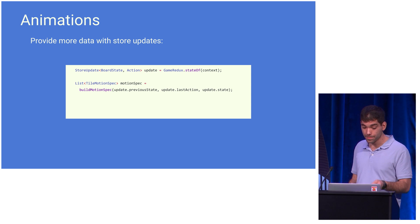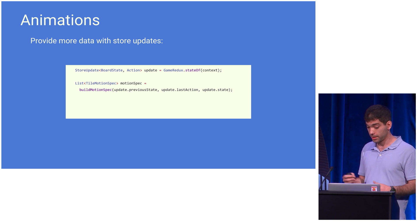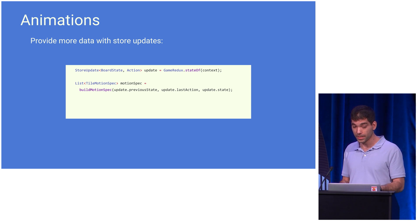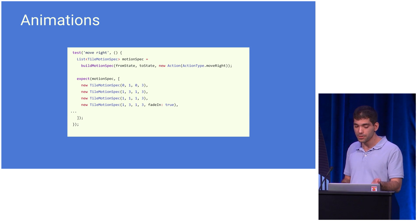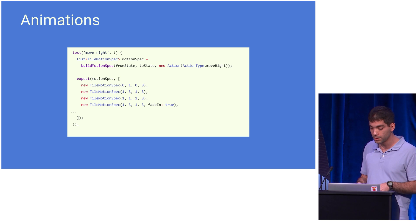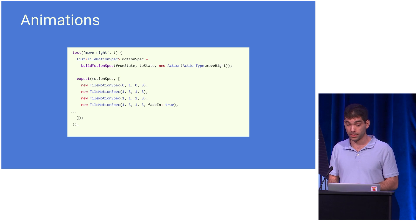This is a snippet from the build method of our board widget, where we basically say: we got this triplet from the store — we got the new state, but we also know the previous state and the last action — and we're going to use that triplet to build a new motion spec. This is the unit test for our build motion spec method. The motion spec is basically a description of which tile, where it should be going, and what it should be doing on the screen.